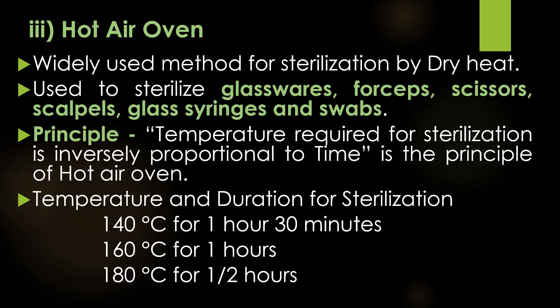The third method of dry heat sterilization is hot air oven sterilization. The hot air oven is a widely used method for sterilization by dry heat. It is used to sterilize glass ware, forceps, scissors, scalpels, glass syringes, and swabs. The principle of the hot air oven is that the temperature required for sterilization is inversely proportional to time. The temperature and duration settings are: 140 degrees Celsius for 1 hour 30 minutes, 160 degrees Celsius for 1 hour, and 180 degrees Celsius for 30 minutes.